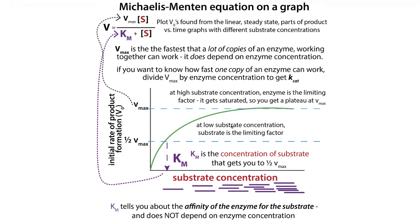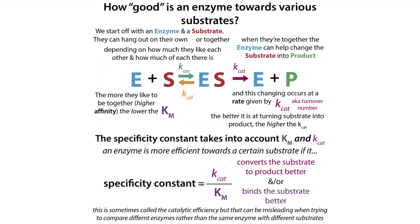Kcat corresponds to the Vmax — your maximum velocity — divided by your enzyme concentration. We also have a term called the specificity constant, sometimes called the catalytic efficiency, though that term is a bit misleading because it's not really good for comparing enzymes to one another with respect to a single substrate.